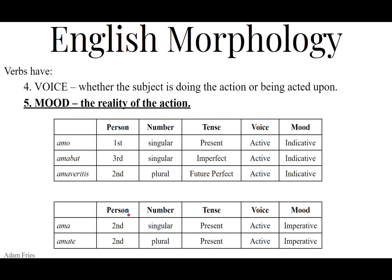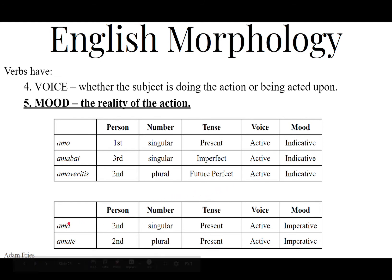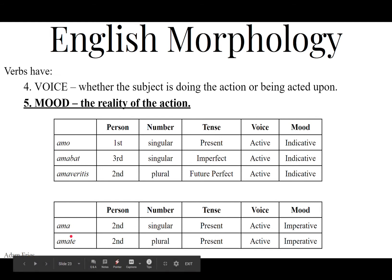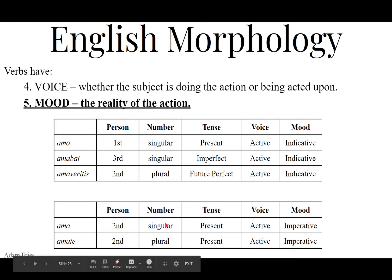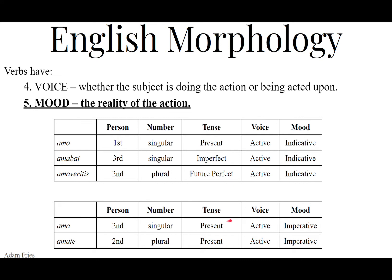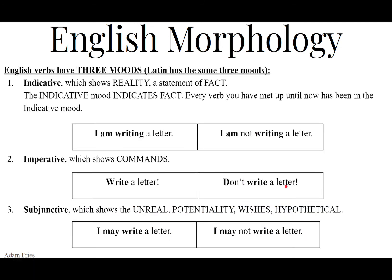New to the game: the imperative mood. Check out these verb forms — AMA and AMATE. Imperatives are going to be second person, either singular or plural. We're only going to focus on the present tense, active voice, and imperative mood. Let's dive deeper into this.